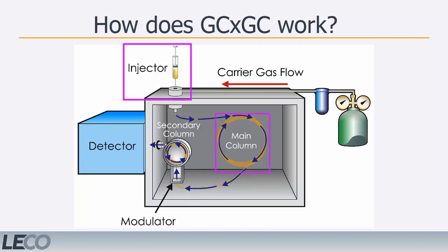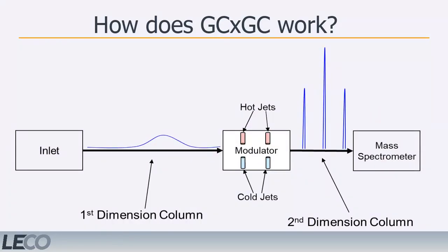The inlet and primary column configuration for a GC×GC system is the same as a standard GC-MS system. Peaks eluting from the primary column are quantitatively segmented into smaller sections by a modulator before being released into the secondary column. This segmenting, combined with the cryofocusing of a thermal modulator, delivers optimum peak widths to the secondary column. The partitioning of the effluent before it passes through the secondary column allows the analytes to be sent in discrete segments without overlapping. The modulator is critical in creating a retention plane of the first dimension separation and allowing second dimension separation to be achieved.